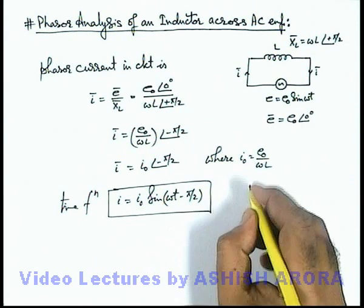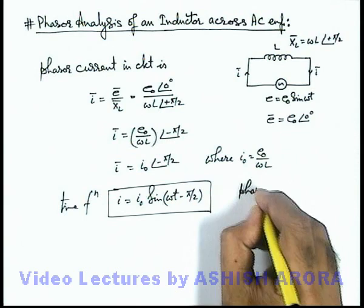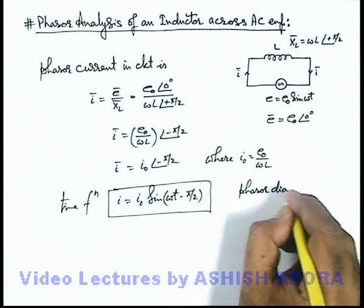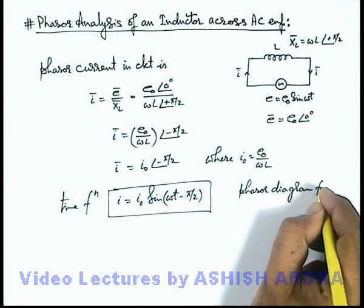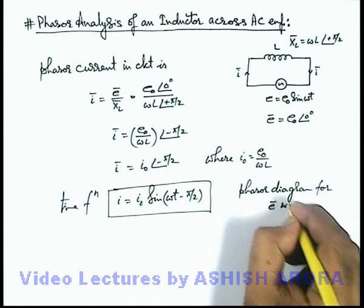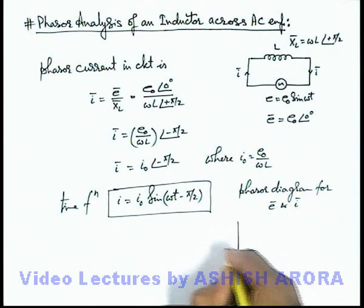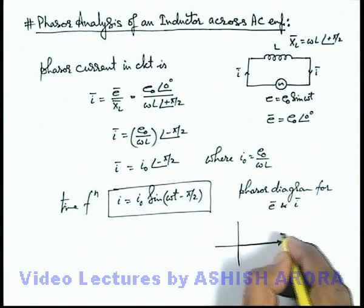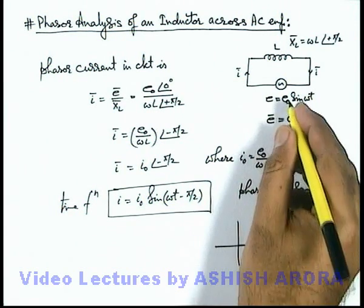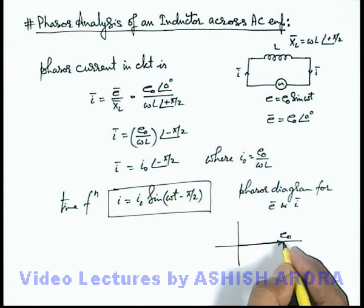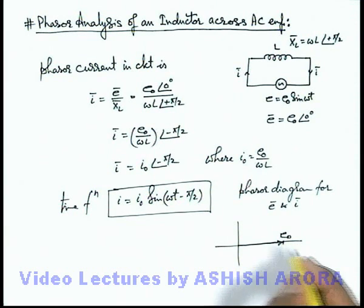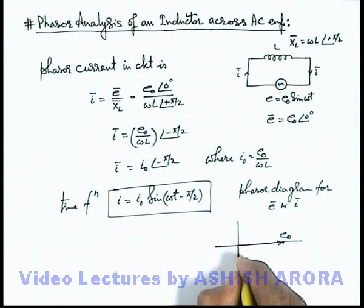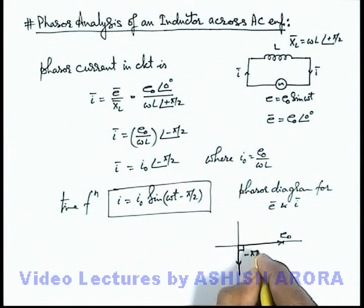And here if we draw the phasor diagram for EMF phasor and I phasor, then here you can see on Argand plane, EMF phasor can be considered at amplitude E₀, magnitude E₀, and phase angle zero. And current in this situation will be lagging behind this EMF by an angle minus π/2, so this'll be the current amplitude.